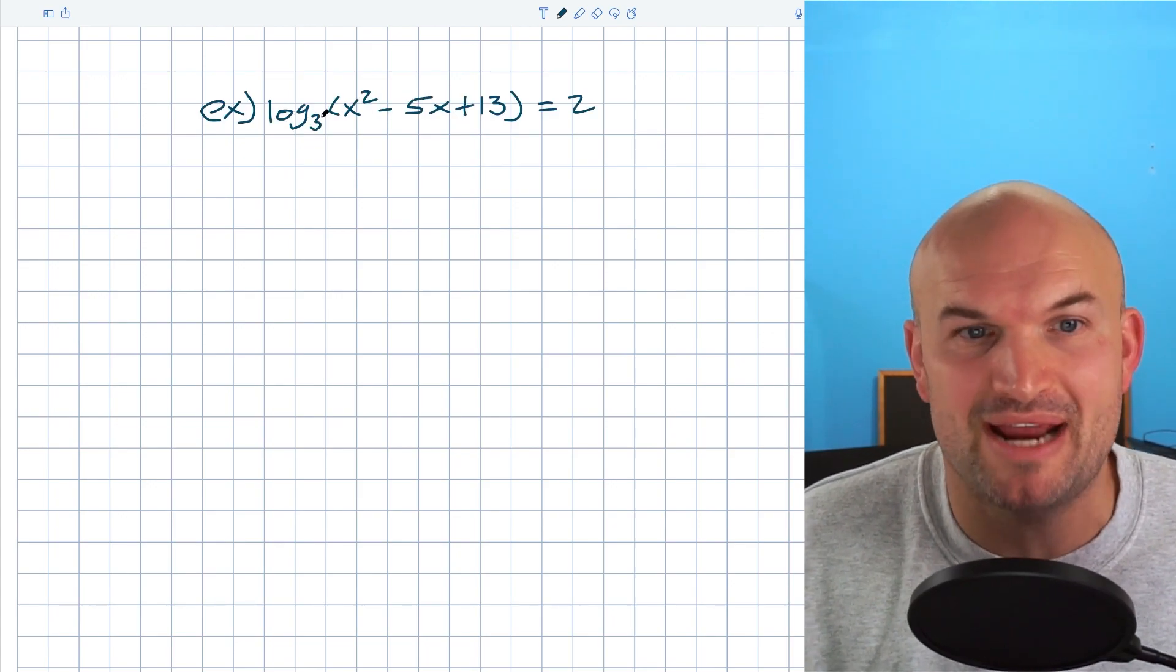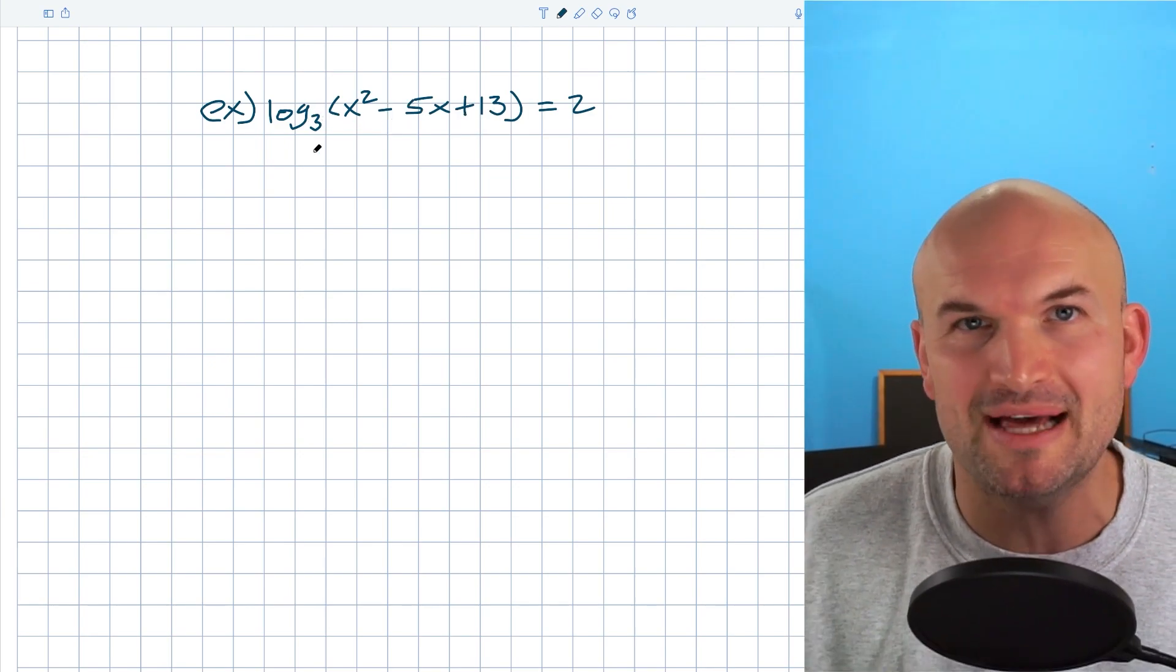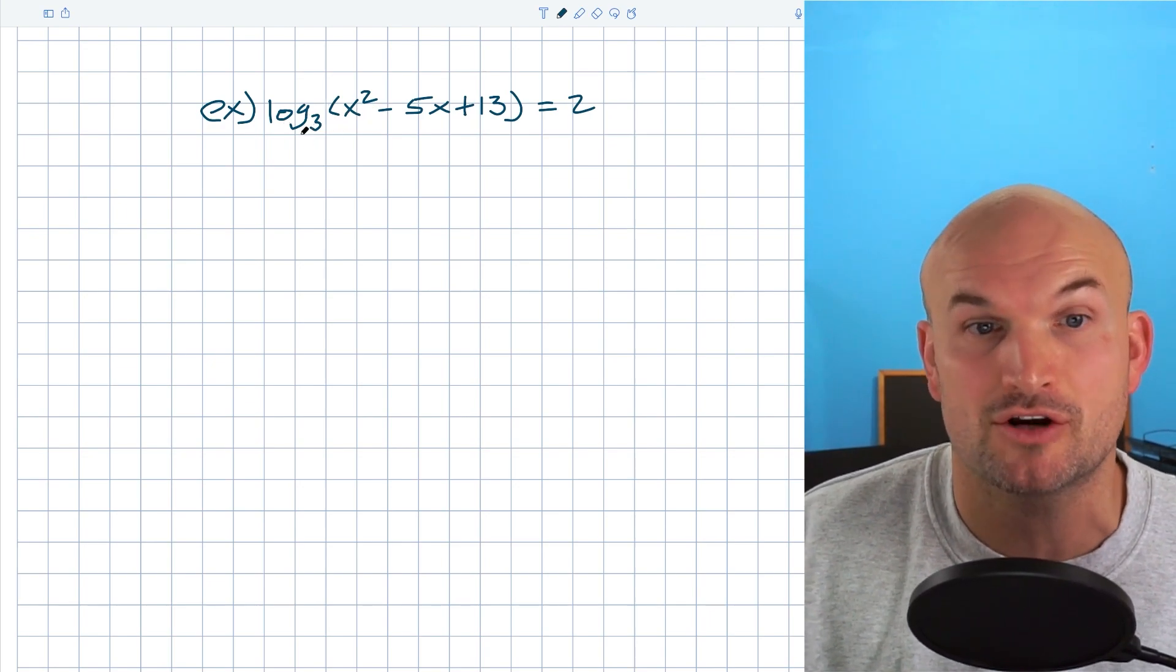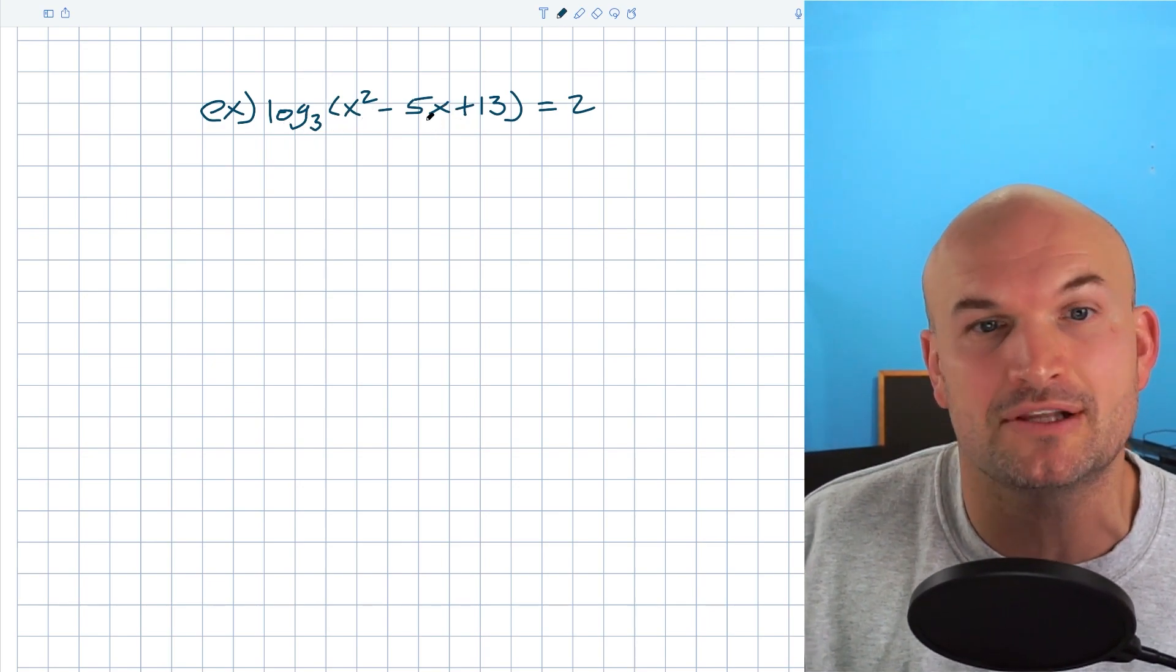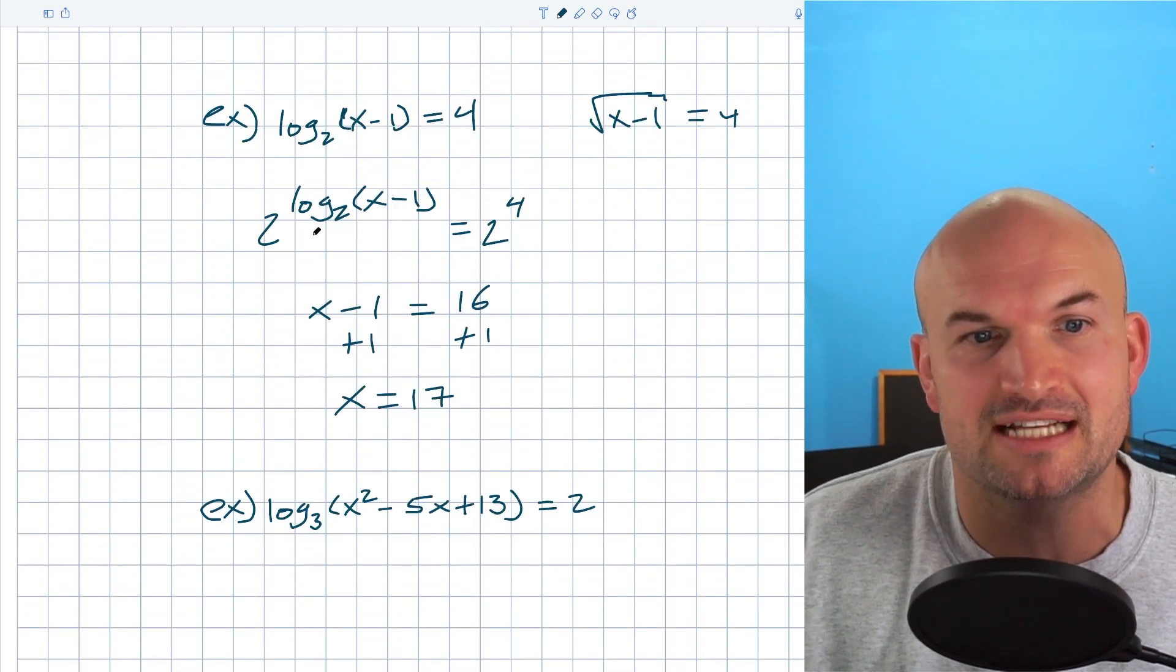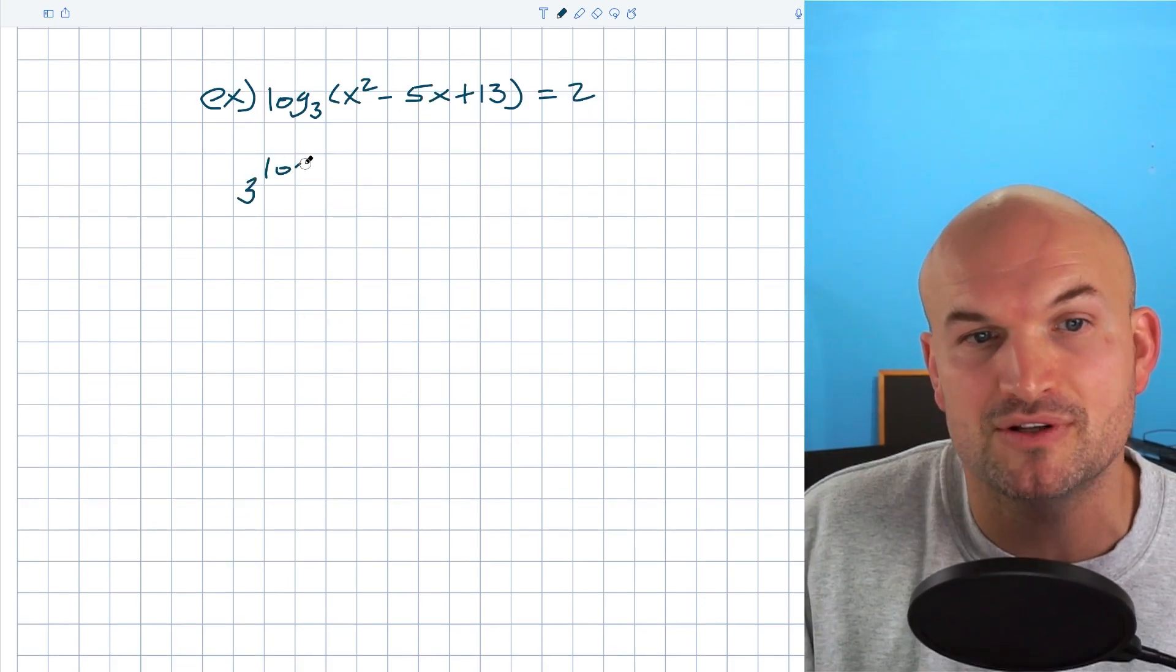So in this example, you can see that again, we have a logarithm and our argument in here is actually a quadratic. But again, I'm not even going to worry about that right now. All I'm going to focus on is getting rid of this logarithm. If I want to solve for x inside of the logarithm, I have to get rid of the log. So I'm going to exponentiate on both sides. Now I'm going to exponentiate with a base 3 on both sides.